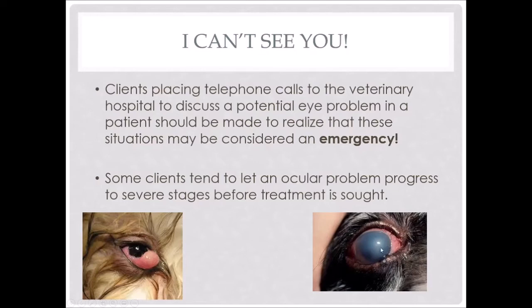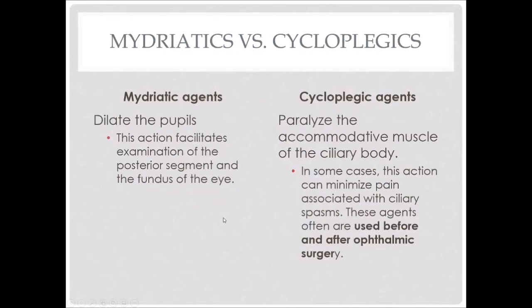There are two different types of medication that we put in the eye to dilate or constrict the pupils, but typically we're dilating the pupils. These pupil dilatory agents are either mydriatic or cycloplegic. Mydriatic agents dilate the pupils, which facilitates examination of the posterior segment and the fundus of the eye, so we can look beyond the lens. Cycloplegic agents paralyze the accommodative muscle of the ciliary body. In some cases, this action can minimize pain associated with ciliary spasms, so there may be times when we choose a cycloplegic agent over a mydriatic agent.